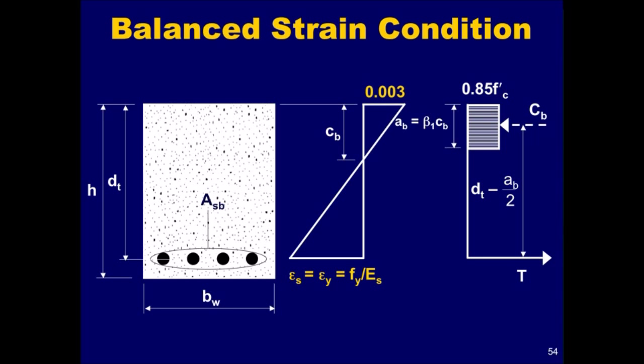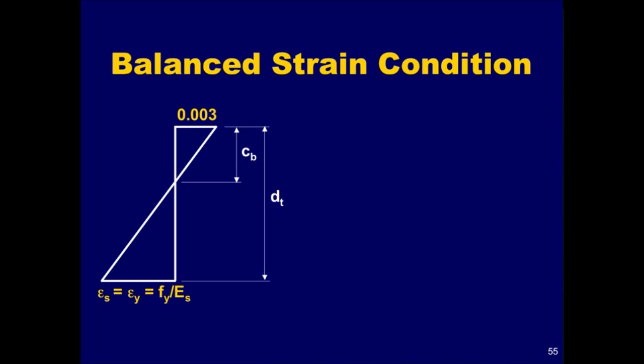We will now discuss the balanced strain condition in more detail, and then introduce the concepts of compression-controlled and tension-controlled sections. The ratio of the neutral axis depth C sub B to extreme depth D sub T, to produce a balanced strain condition in a section with only tensile reinforcement, may be obtained by applying strain compatibility conditions. Referring to the figure, the equation for C sub B divided by D sub T is applicable for a linear strain condition — more simply, it has been obtained from similar triangles.